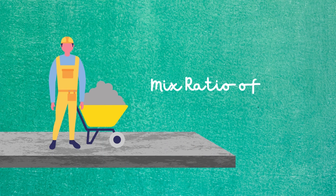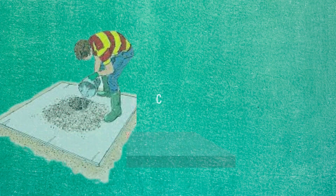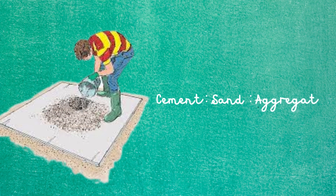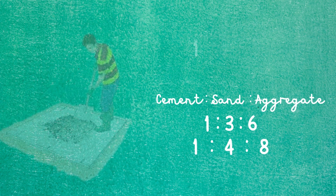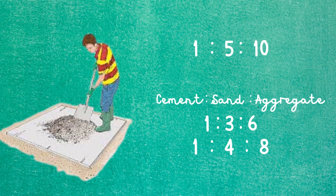The next part of the video is about the mix ratio of lean concrete. The most common mix ratio used for lean concrete involves one part of cement with three and six, or four and eight parts of sand and aggregate. In some cases, you can also use a mix ratio of one part of cement with five and ten parts of sand and aggregate.